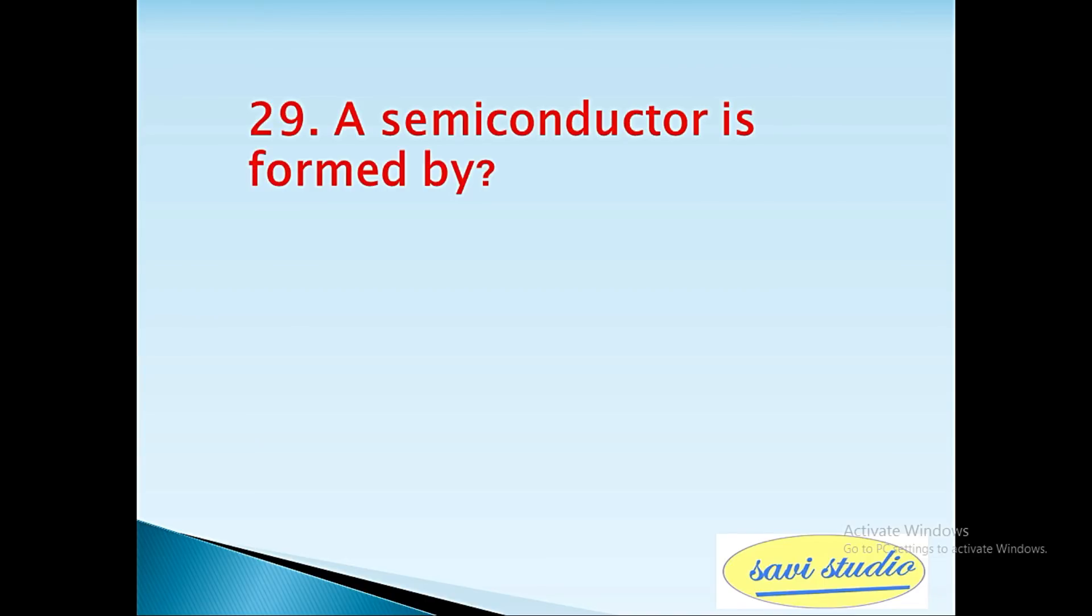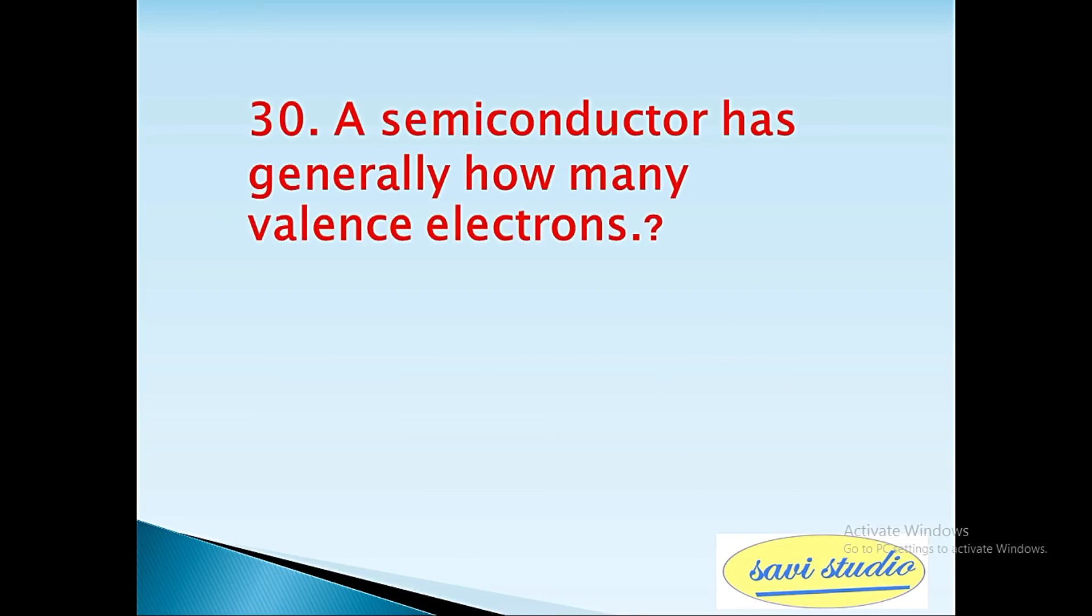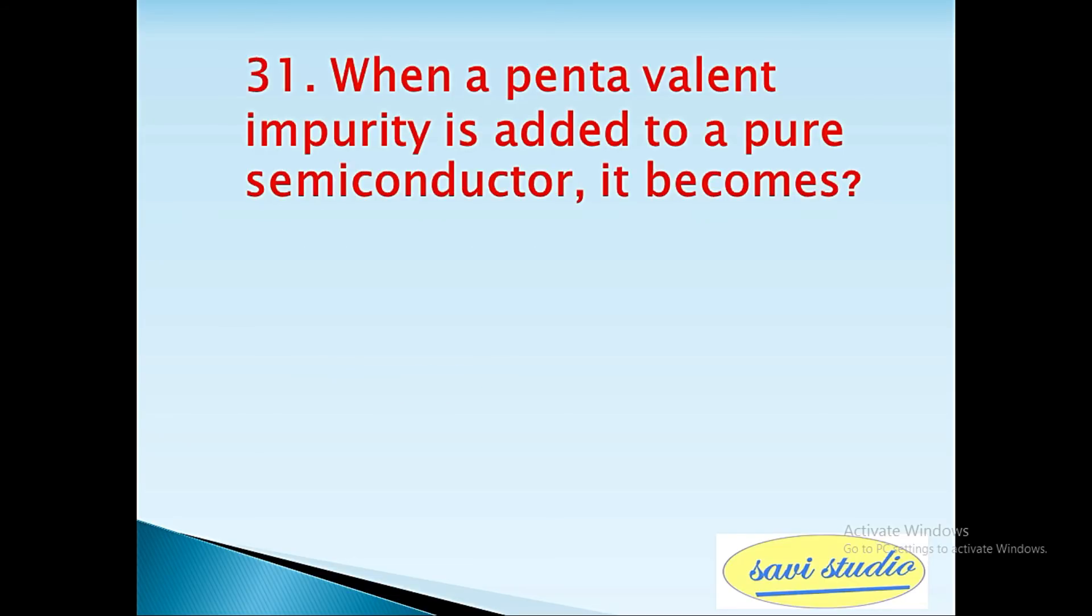29th question: A semiconductor is formed by? Answer: covalent bond. 30th question: A semiconductor has generally how many valence electrons? Answer: 4. 31st question: When a pentavalent impurity is added to a pure semiconductor it becomes? Answer: an n-type semiconductor.